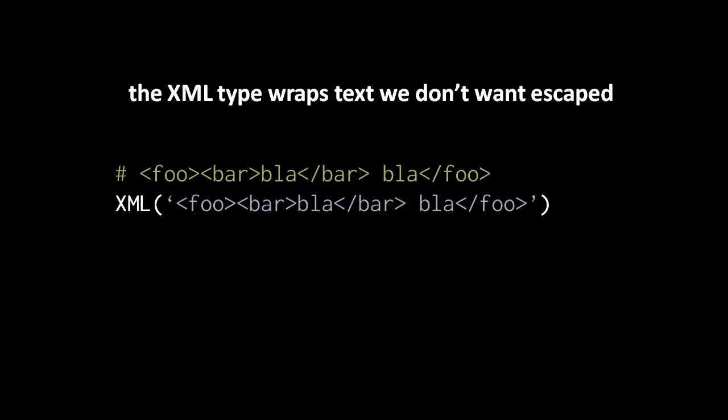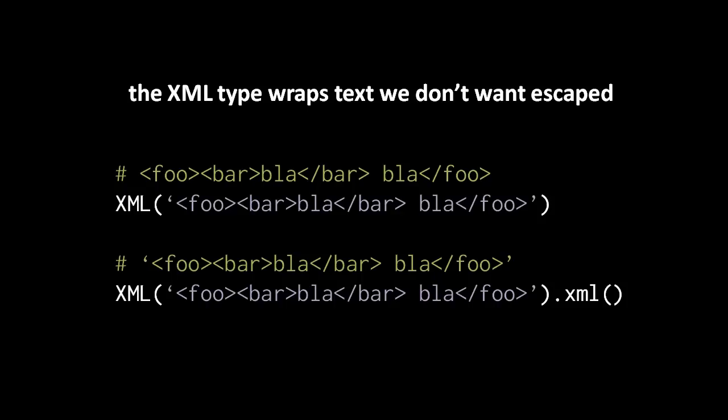There's another useful helper object which does not represent an HTML tag, but rather any text we don't want to get XML escaped. This helper type is called XML, because it's useful for representing XML but also any other text like JavaScript code. When we create an XML object with proper XML content, it's not escaped — calling the XML method on it returns the verbatim content. The XML type also has optional features to sanitize the text, for example ensuring it parses as proper XML.